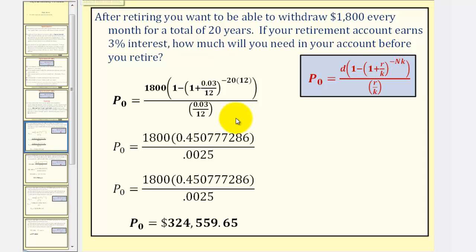Let's begin by identifying all the important information. Since you want to withdraw $1,800 every month, this tells us that D, the regular withdrawal amount is $1,800. And because the withdrawals are monthly, K, the number of compounds per year, would be 12. You want to make withdrawals for a total of 20 years, so N is 20.